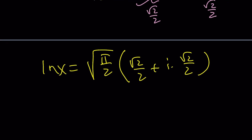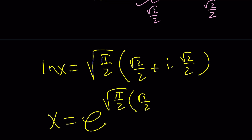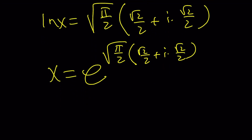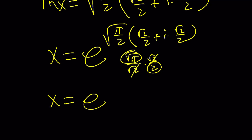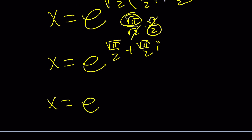At this point we can write x equals e to the power of [√π/2 · (√2/2 + i·√2/2)]. We can distribute and separate: multiplying √π/2 by √2/2, the √2s partially cancel and we get √π·√2/2 in the real part and √π·√2/2 in the imaginary part — that simplifies to e to the power (√2·√π/2 + i·√2·√π/2), which becomes e^(√π/2) times e^(i·√π/2).